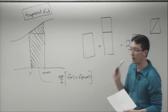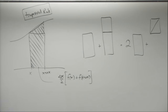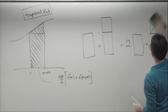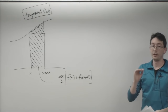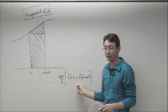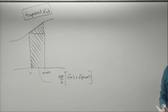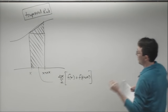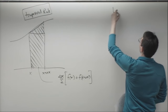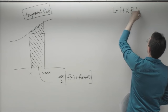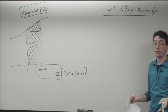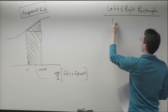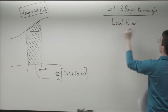With numerical differentiation we talked a lot about error analysis. Here I'm just going to tell you what the errors are and give a very high-level overview of how you'd confirm them, but we're not going to work through all the details. For the left and right rectangle rule, we have two types of error: local error and global error.